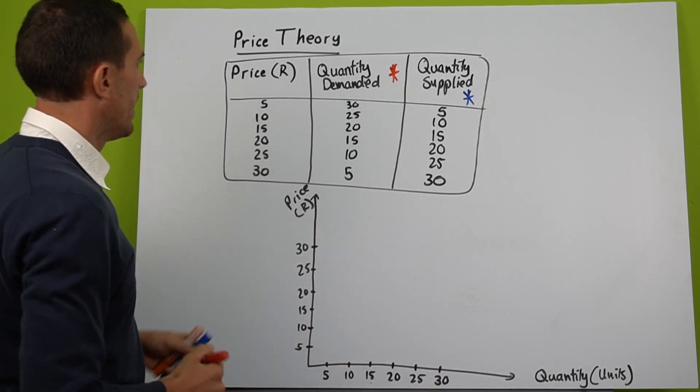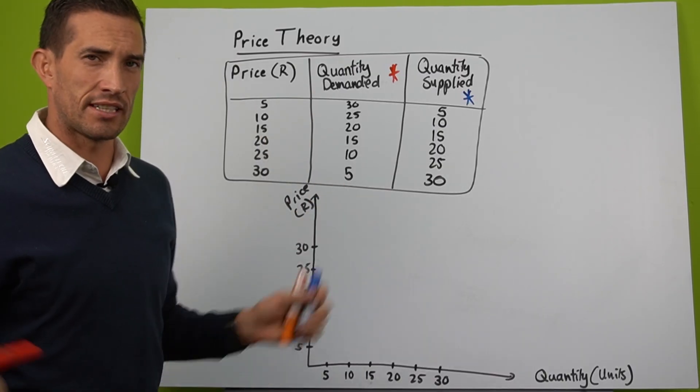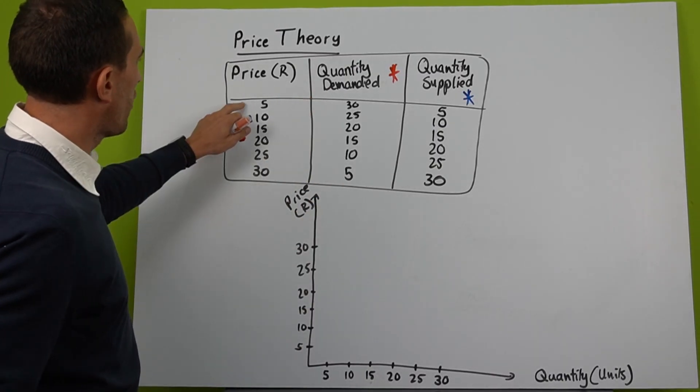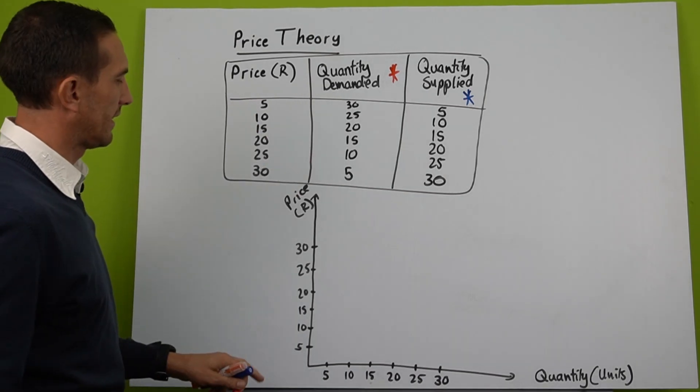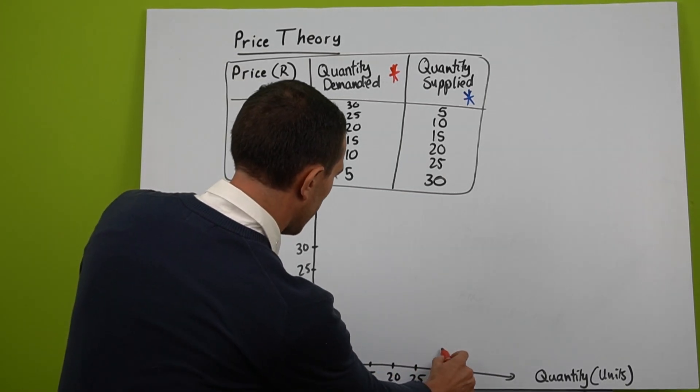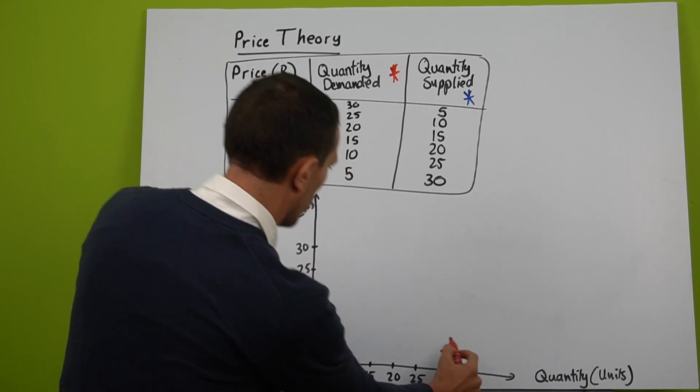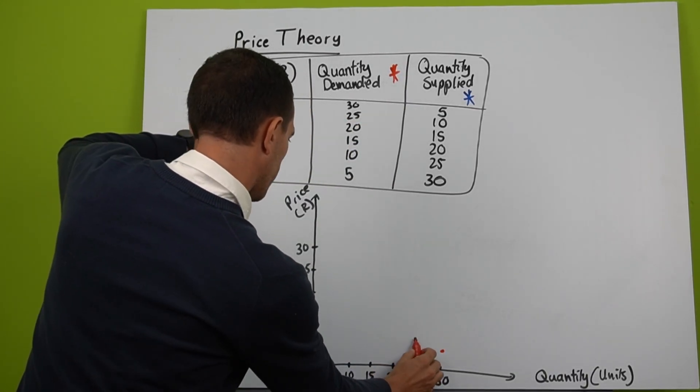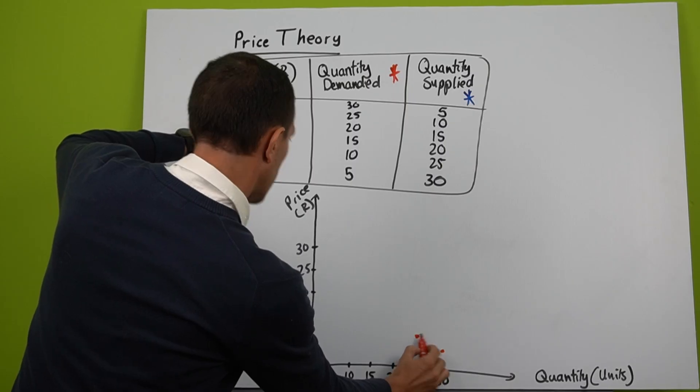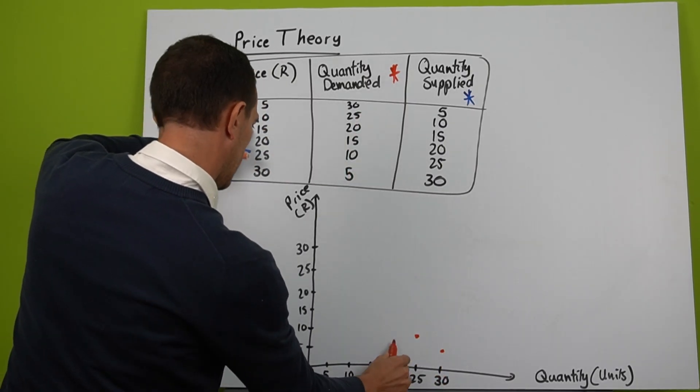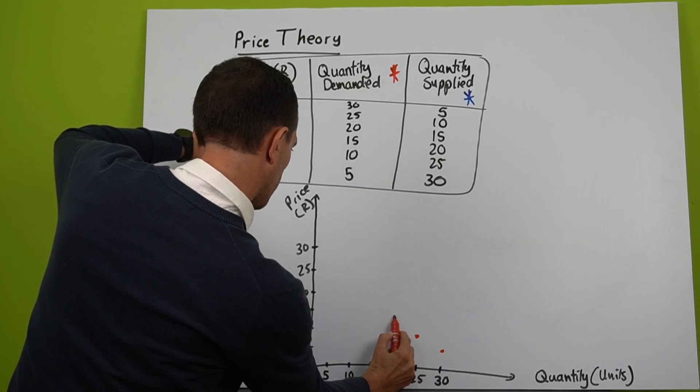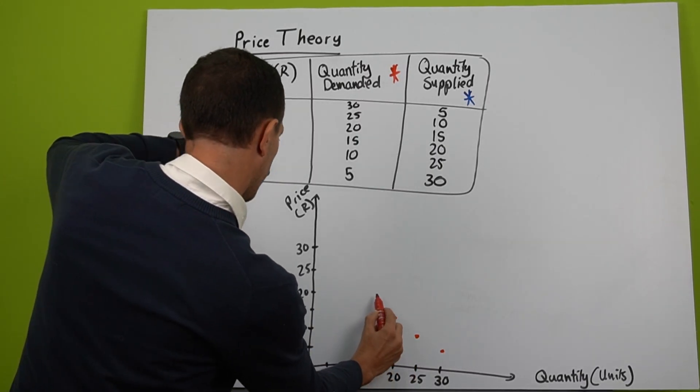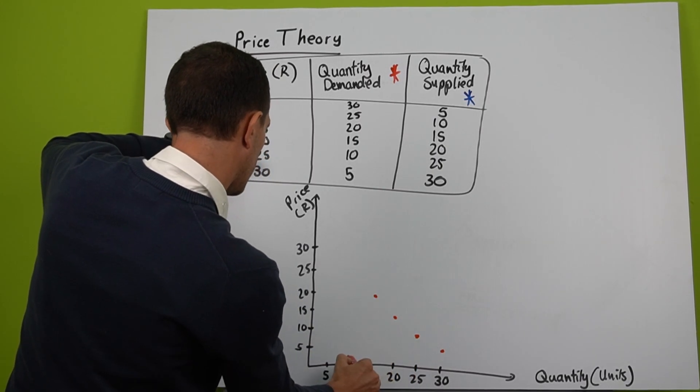Now we just have to connect the dots. This is great work. Let's start with quantity demand. At 5 rand they want to buy 30 units, so at 5 rand they want to buy 30. I'm going to draw a dot. At 10 rand they want to buy 25. At 15 rand they'll buy 20. At 20 rand they'll want to buy 15, and so it continues.